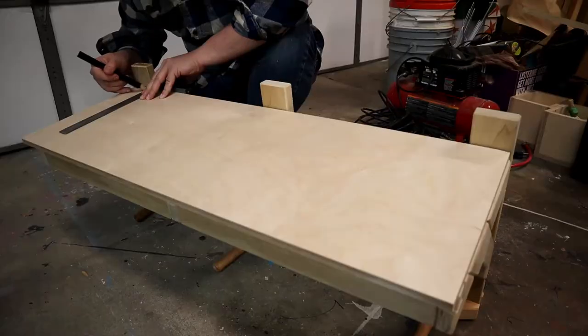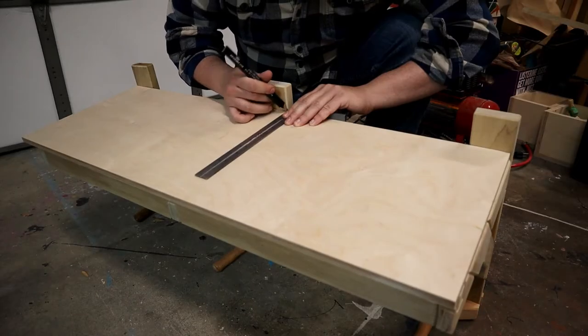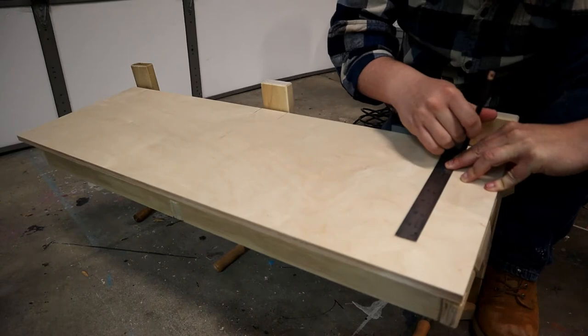A piece of half-inch Baltic birch plywood acts as both a top shelf and also helps to keep the entire project square once it's glued on top.